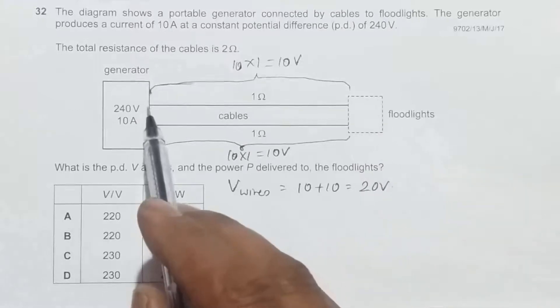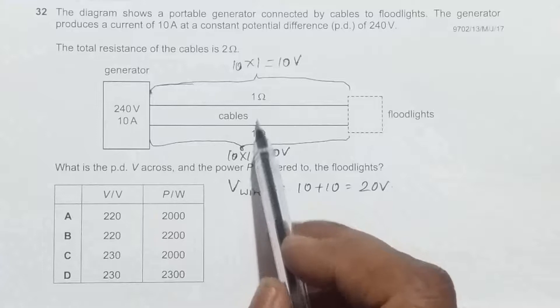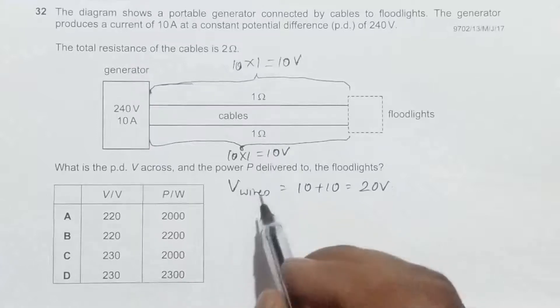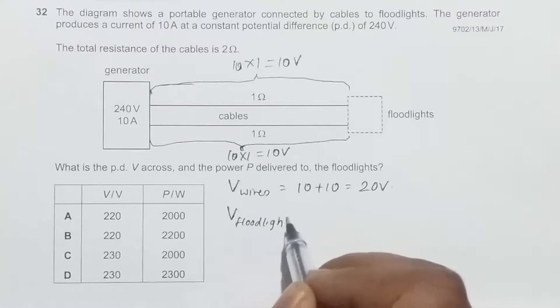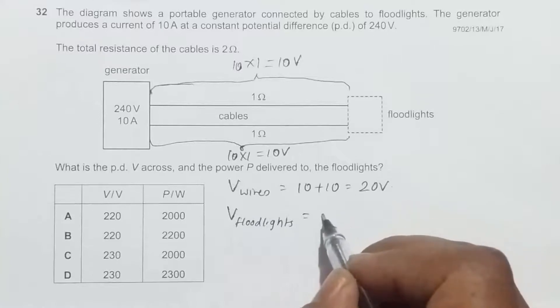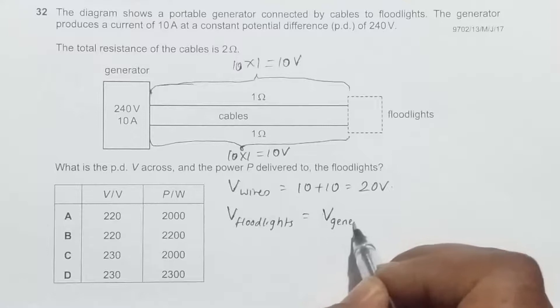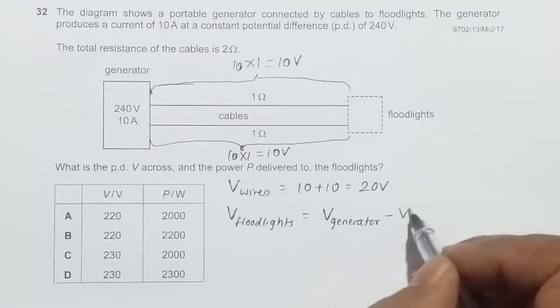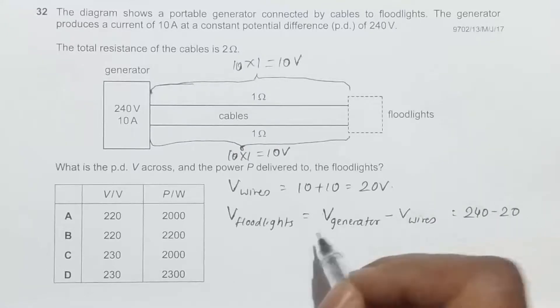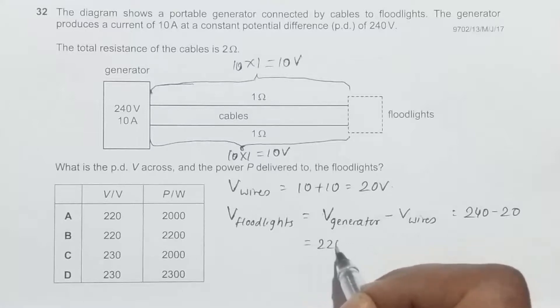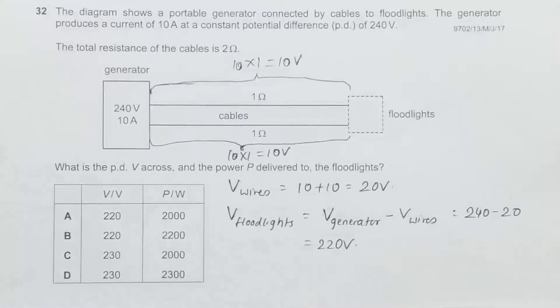Now according to Kirchhoff's laws, the PD across the floodlights will be the PD given by the source minus the potential drop across the wires. The PD across the floodlights should equal the PD across the generator minus the PD across the wires, so it should be equal to 240 minus 20 equals 220 volts.